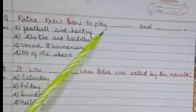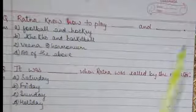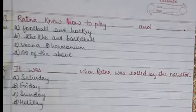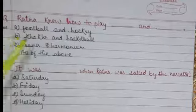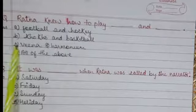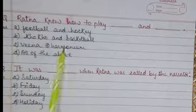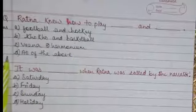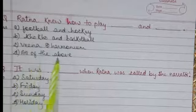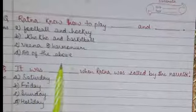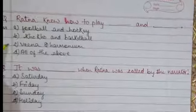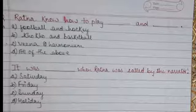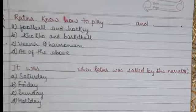Ratna knew how to play dash and dash. Options: Football and hockey, Coco and basketball, Veena and harmonium, All of the above. Option C is correct — Veena and harmonium. Ratna knew how to play Veena and harmonium.